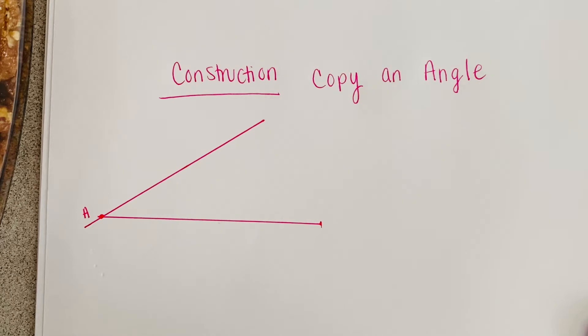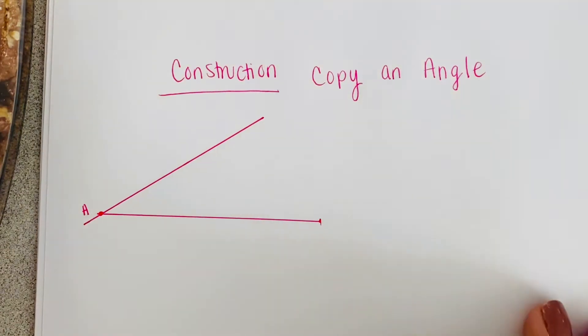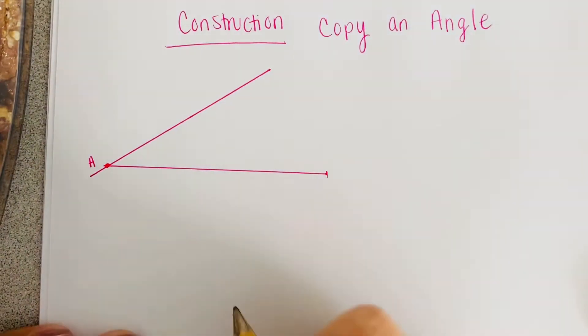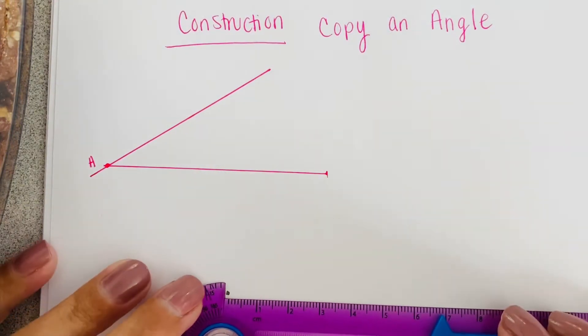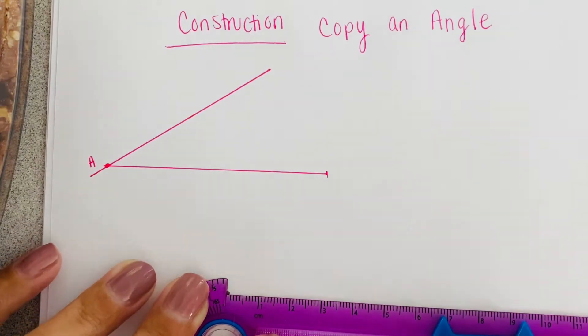So what I'm going to do now is somewhere else on my paper make A prime. So I'll have a point A prime. You're going to draw a line coming off of A prime. It doesn't have to be anything crazy, nothing super long.